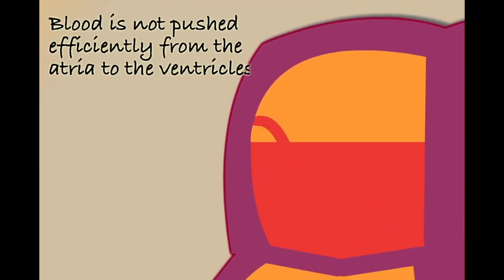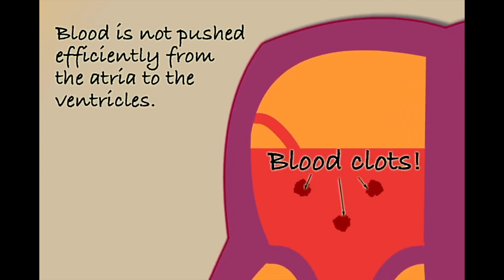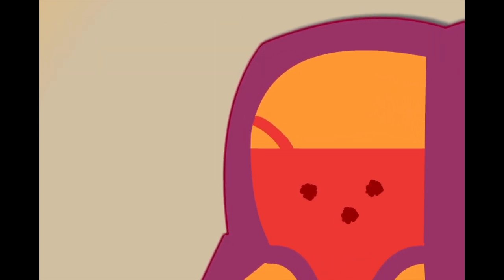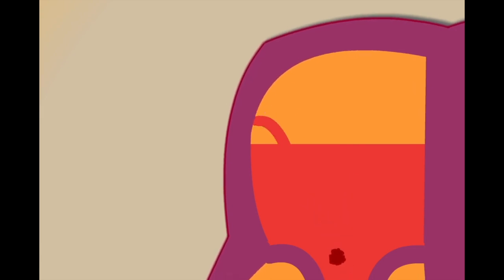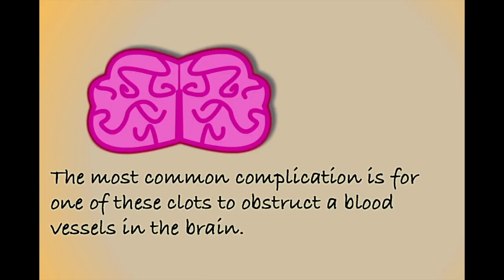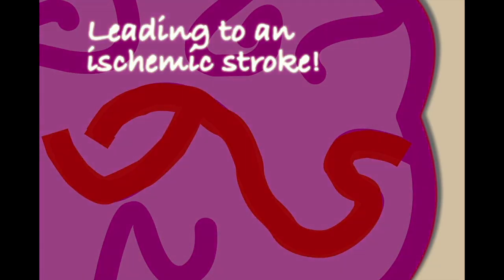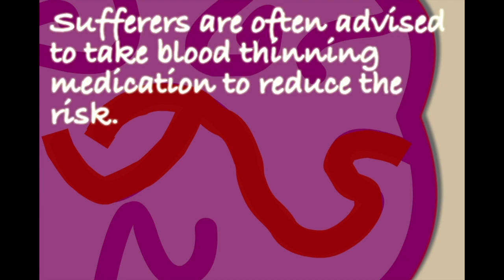As the atria don't effectively contract in AF, blood within the chambers can become stagnant, which can lead to the formation of blood clots. These clots can then migrate out of the heart and cause problems elsewhere in the body. The most common complication is for one of these blood clots to obstruct a blood vessel in the brain, leading to a stroke. AF significantly increases the risk of stroke, and sufferers will often be advised to take blood thinning medications such as warfarin to reduce the risk.